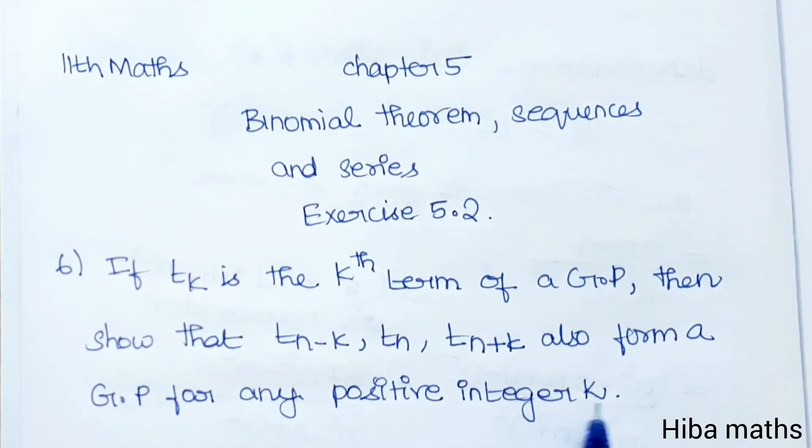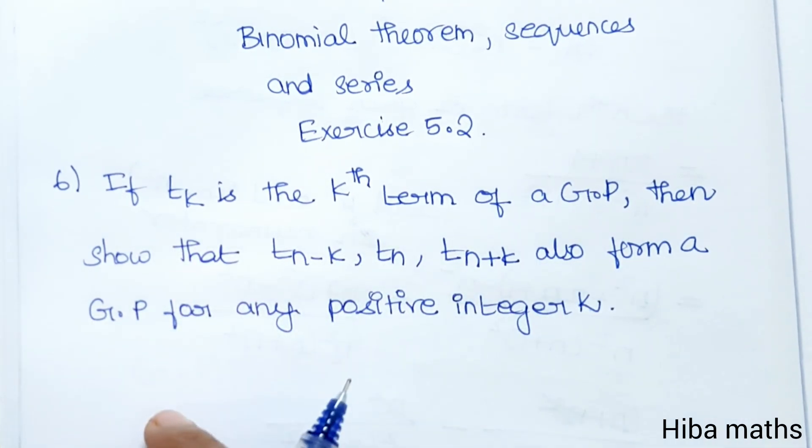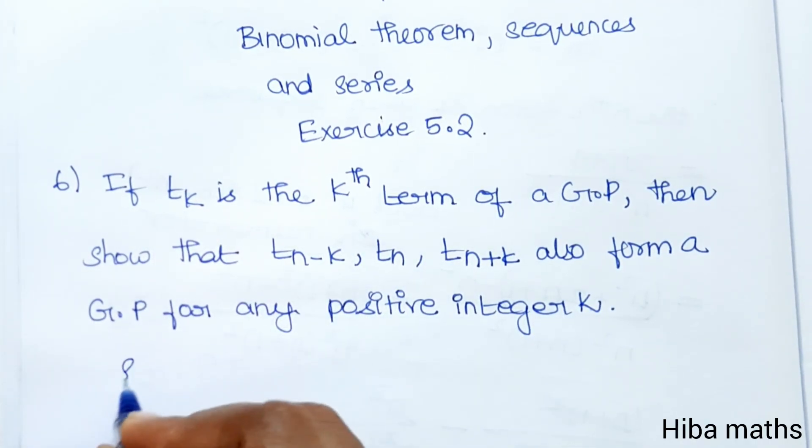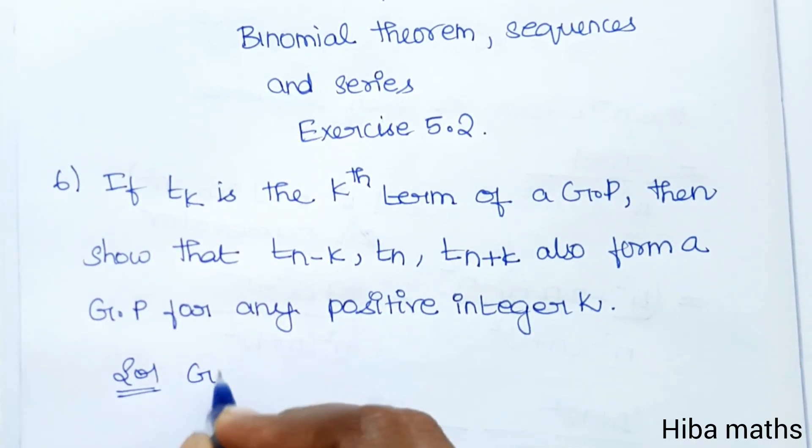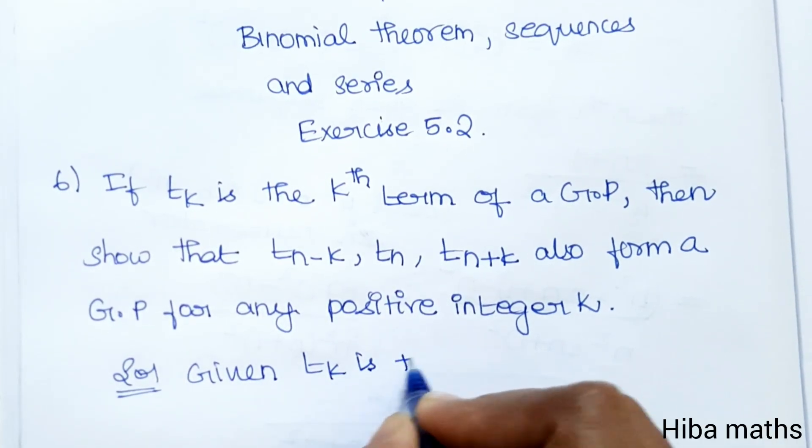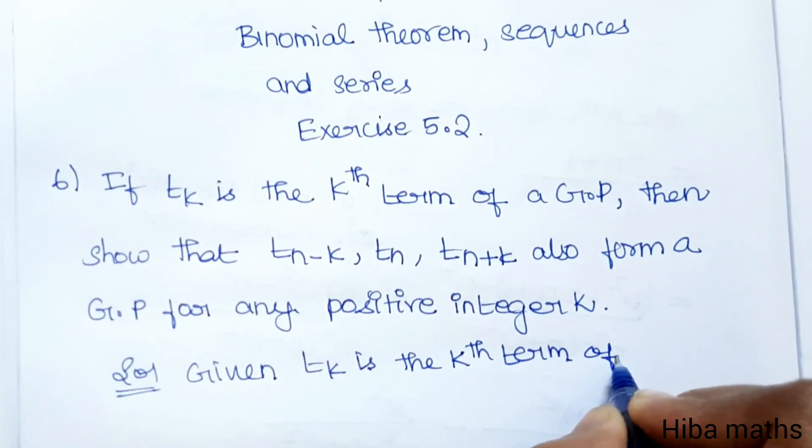This is given in the GP. We need to prove that t_k is in the GP. Then we write t_n is equal to a·r^{n-1}. This is the format we'll use. Given that t_k is the kth term of GP.